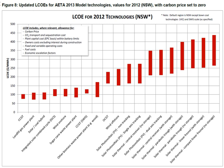The levelized cost of energy is a measure of a power source that allows comparison of different methods of electricity generation on a consistent basis. It is an economic assessment of the average total cost to build and operate a power-generating asset over its lifetime, divided by the total energy output of the asset over that lifetime. The LCOE can also be regarded as the average minimum price at which electricity must be sold in order to break even over the lifetime of the project.